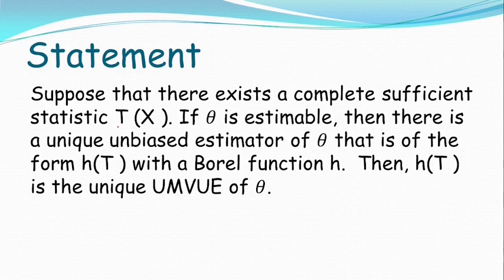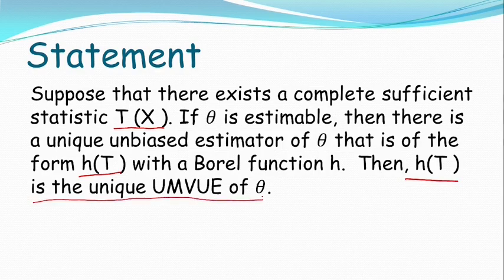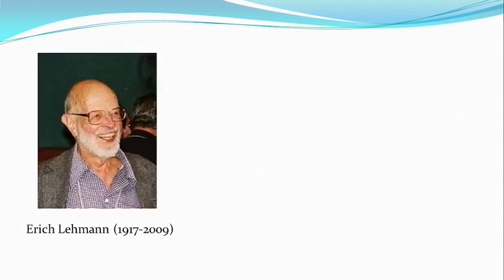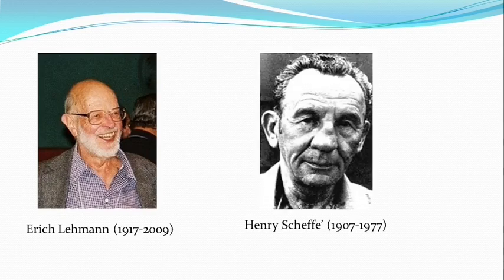Aamadhe random variable jodhe x hoye, tahale t is the complete sufficient statistic of the parameter theta, ebang h of t is a function of t jeta theta-r unbiased estimator. Tahulay h of t have the unique UMVUE of theta. A theorem tabishkar karen dujan renowned statistician — Eric Leo Lehmann ebang Henry Scheffé. A dujan great statisticianen nama no jai, A theorem nama karan karahai Lehmann-Scheffé's theorem.